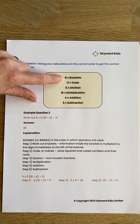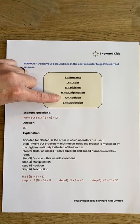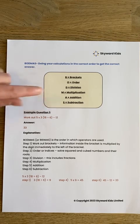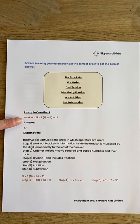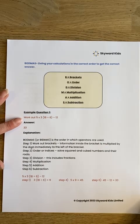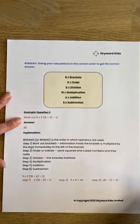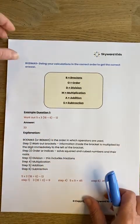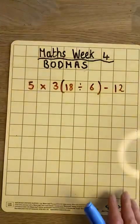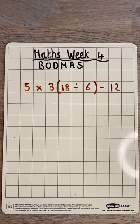So anything inside brackets goes first, then the indices, then the division, then multiplication, then addition, then subtraction. We're going to work through this first example which has a number of different order maths operations. The question says: work out 5 times 3, and inside brackets 18 divided by 6, minus 12. So the first thing I'm going to do is write out my sum and go through it step by step using BODMAS to help me.